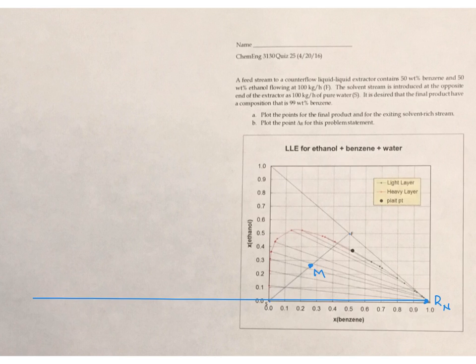Which means that a straight line from Rn to M should extend across, and where it touches the other, the heavy liquid layer, this is going to be extract one.